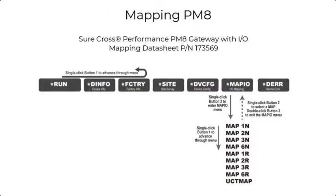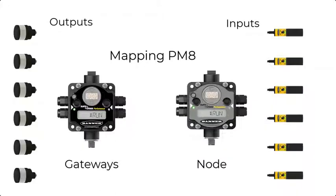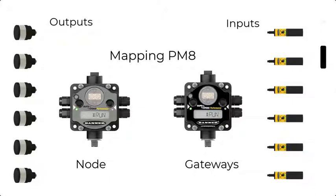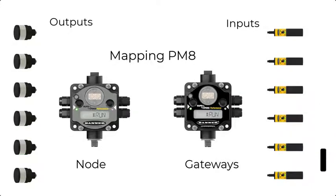By default, all pre-map radios ship in MAP1N mode, meaning the first six inputs from node 1 are mapped to the first six outputs on the gateway, as shown in the example. Likewise, the first six inputs on the gateway are mapped to the first six outputs on the node.